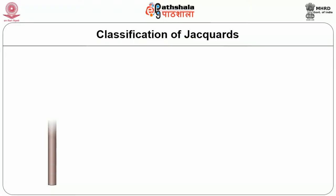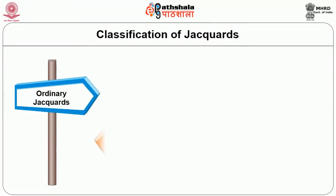You have a very large design depending on hundreds of ends and picks which could be manufactured easily using a jacquard because each and every thread would be independently handled, independently operated by a jacquard machine. As to how this jacquard is actually classified, primarily they are broadly classified as an ordinary jacquard and a special jacquard.